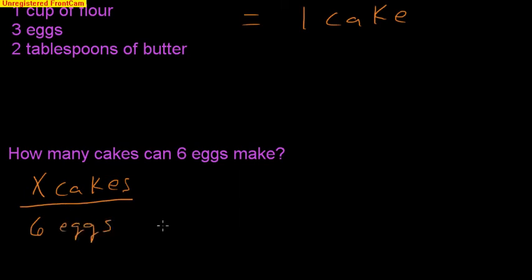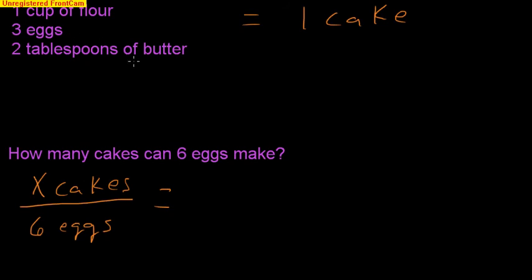As you're setting up your proportion, the left-hand side comes from the problem — x cakes over six eggs. The right-hand side of the proportion actually comes from our recipe. Later on, we're going to see that the recipe is going to be analogous to our balanced chemical equation. But let's just stick with the recipe analogy for right now.